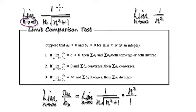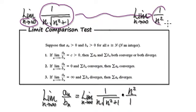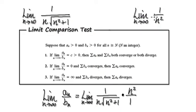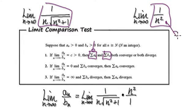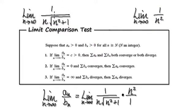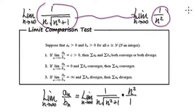As n heads towards infinity, this thing here will act as 1/n². So with the limit comparison test, we are going to compare our series with 1/n². We are trying to investigate this series, so we compare it with something we know about. We know that 1/n² is going to converge, because we've seen this many times.